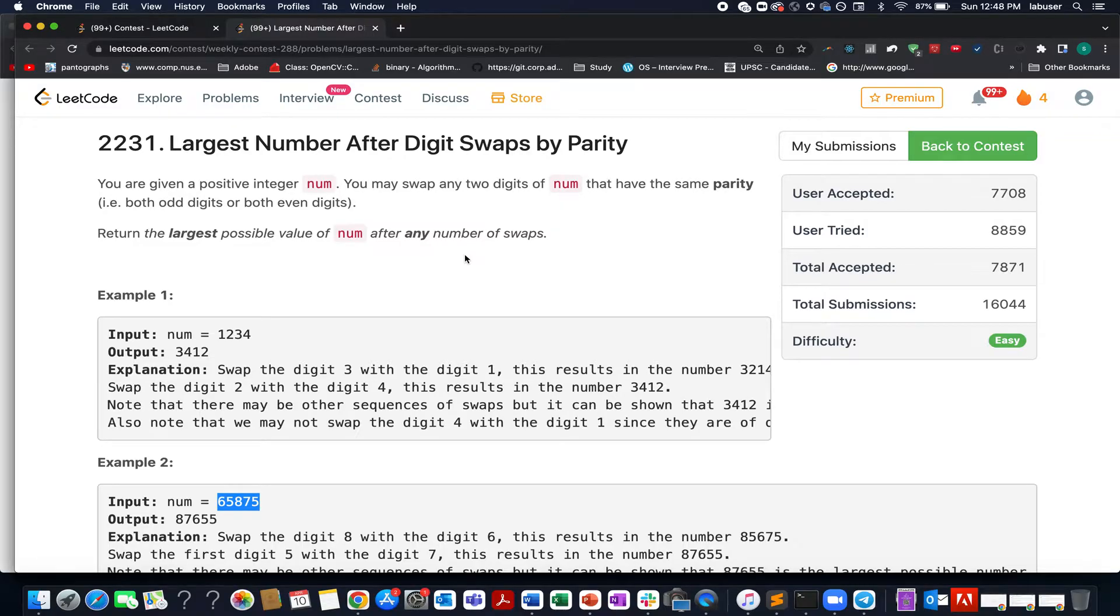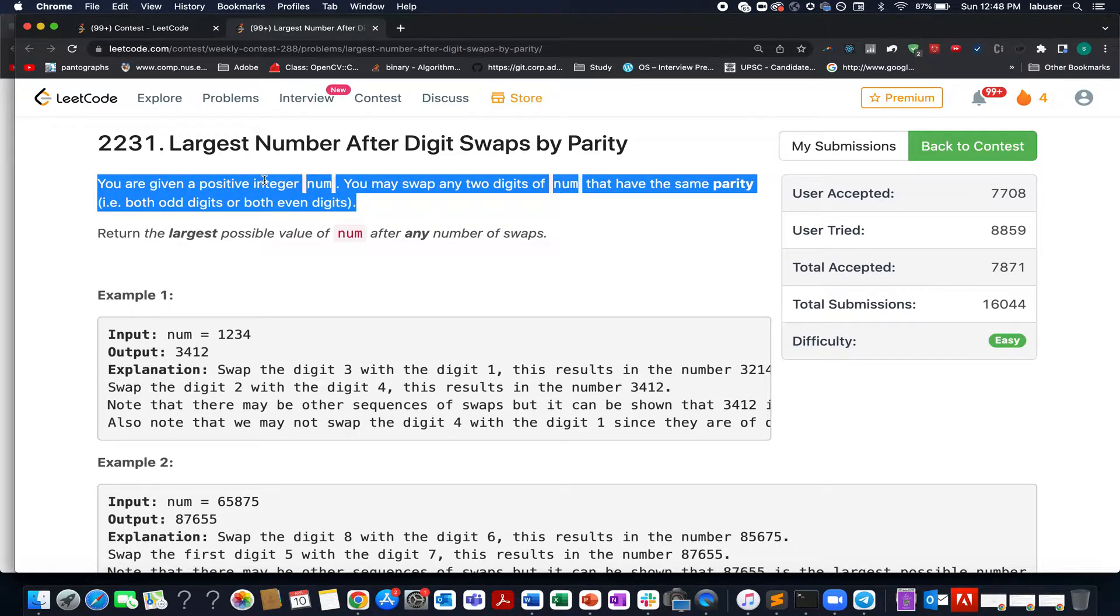Continuing the series of weekly contest 288, here comes the first question in the queue. My name is Anshir Udeja, I am working as Software Developer 4 at Adobe. Here I present the first question of the contest, which is Largest Number After Digit Swap by Parity.